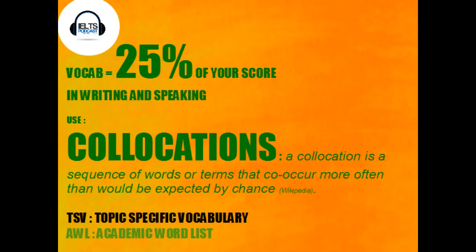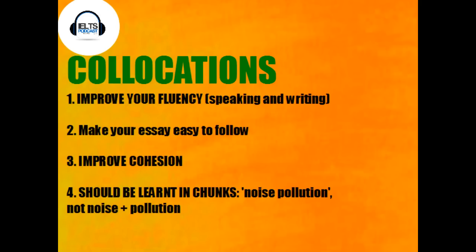Also, to get those band seven, band eight scores, you need topic specific vocabulary, and it's obviously recommended to use words from the academic word list. Collocations improve the way we speak because they improve your fluency. If it's a set group of words, the native speaker or the person listening is going to expect the next words, so it makes it easier to understand. If it's easier to understand, it improves your cohesion and makes it easier to follow what you're saying.